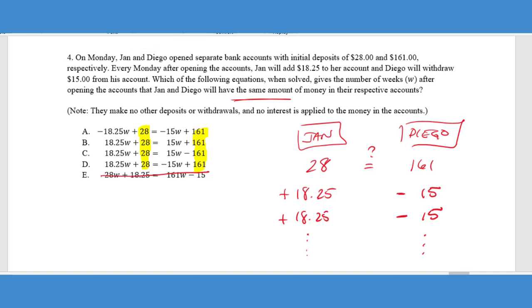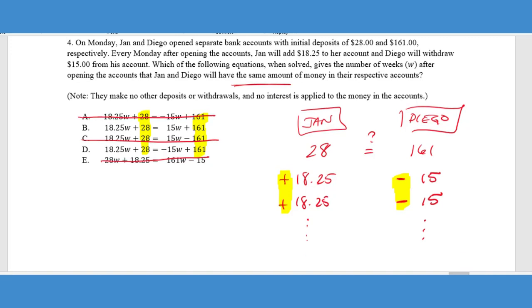So if Jan keeps adding $18 and 25 cents and Diego keeps subtracting $15, when will those two accounts equal? So that's basically what we're trying to get. So we know that Jan's account started with $28, not 28 times W. So we know that that is going to be out. We know that Diego's account started with $161, not subtracting $161. So we know that that equation is out. So just by doing some quick analysis of what the answer choices are, we can immediately eliminate two answer choices. And so you always want to be on the lookout for process of elimination. What can I get rid of and narrow down my answer choices?